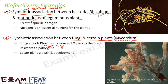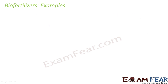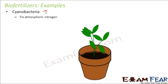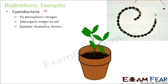Mycorrhiza also acts as a bio fertilizer because it provides phosphorus — a macronutrient — to the plant. Rhizobium provides nitrogen, and both nitrogen and phosphorus are very important macronutrients for plant growth and development. The third example is cyanobacteria, also called blue-green algae. These also help in fixing atmospheric nitrogen and add organic matter to the soil. Examples include Anabaena and Nostoc.